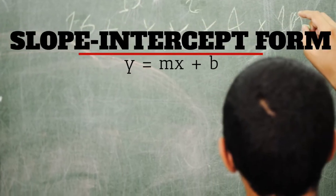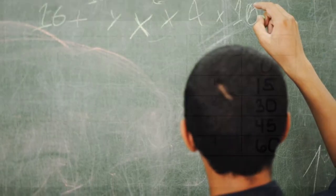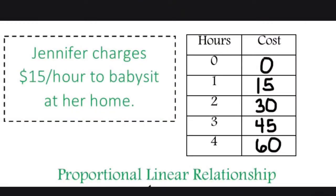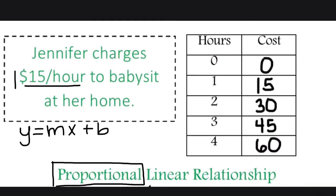So what is slope-intercept form, y equals mx plus b? Well, let's take a look. First, we're going to start with our proportional situation. Jennifer charging $15 an hour to babysit at her home. Slope-intercept form is y equals mx plus b, where m is your slope and b is your y-intercept. If you look at m, we're looking for the rate. What is Jennifer charging? She's charging a rate of $15 per hour.